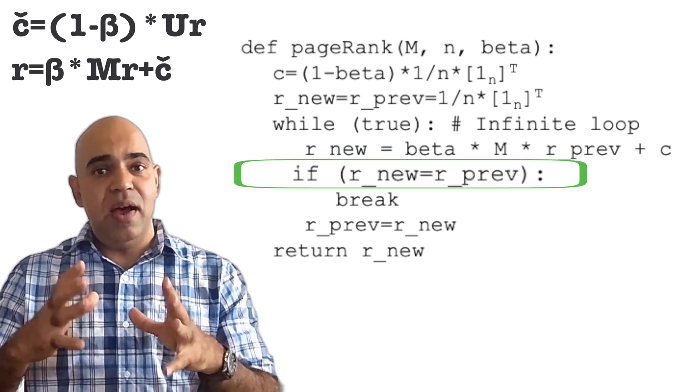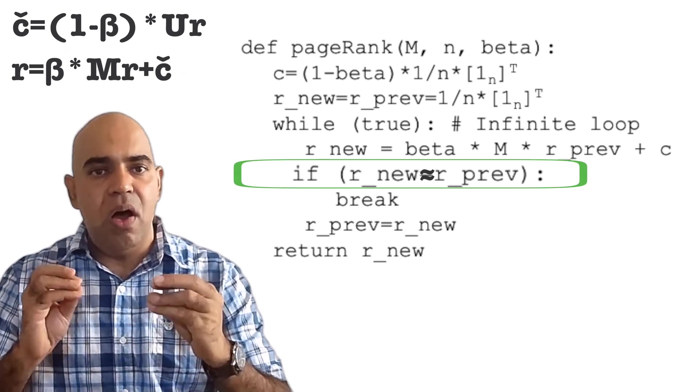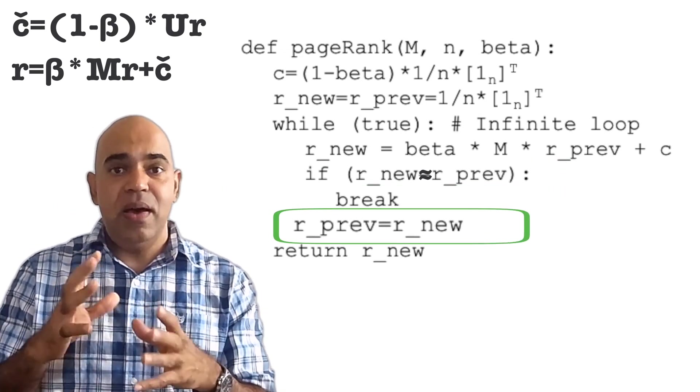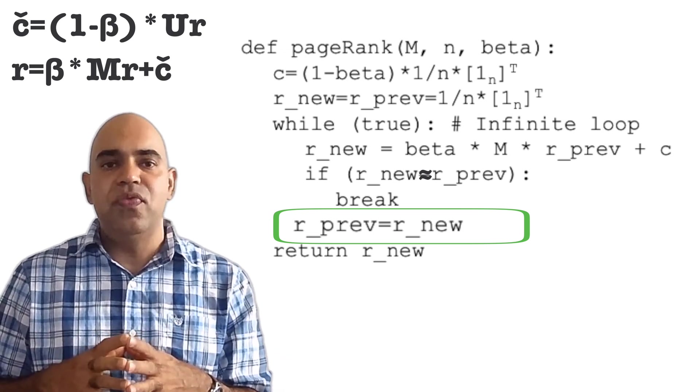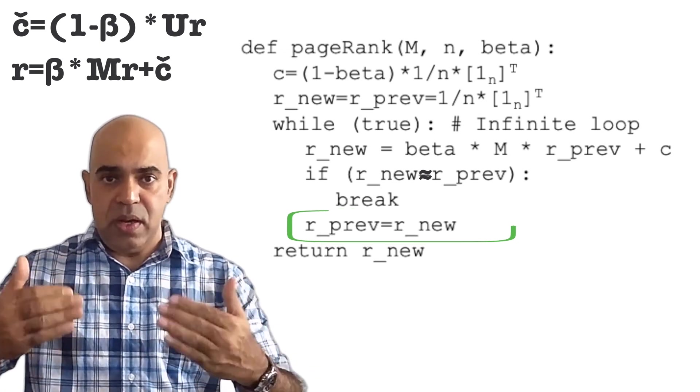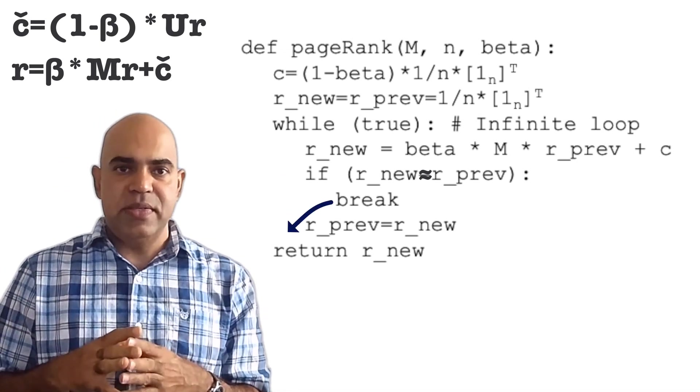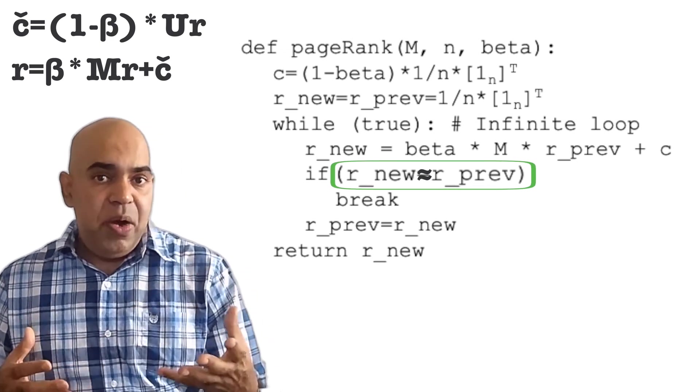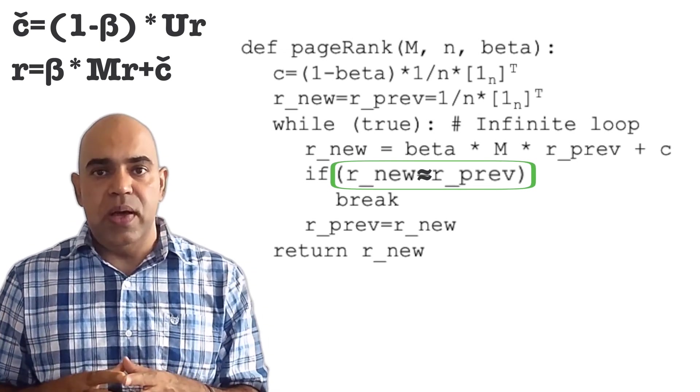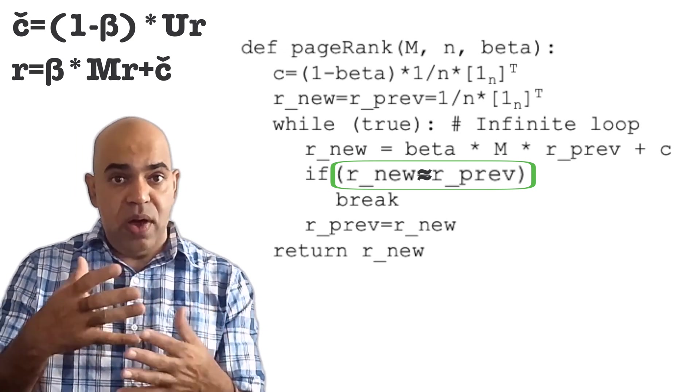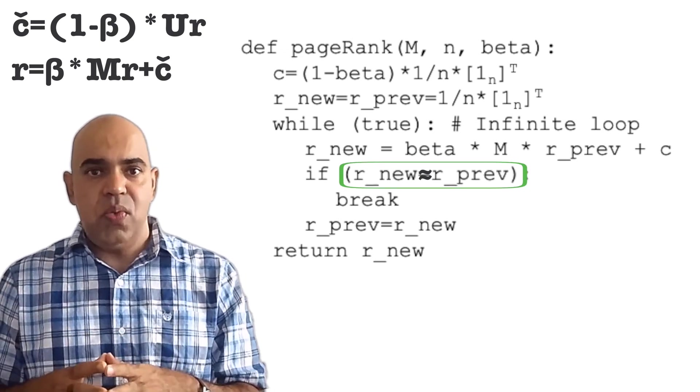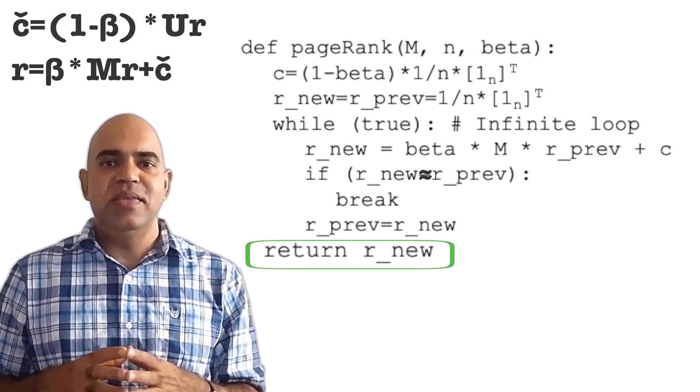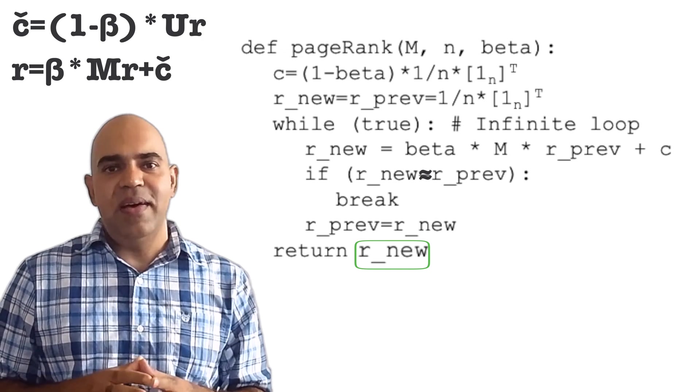If we find that R new and R prev are almost equal, then we break the loop. If not, we update R prev by copying the content of R new. We keep iterating until the algorithm converges. That is, the algorithm keeps iterating till R new and R prev becomes almost equal. Once R new and R prev are equal or almost equal, the loop breaks and the execution comes here. The function returns the latest page rank vector stored in R new.